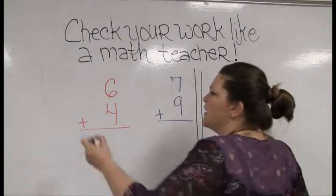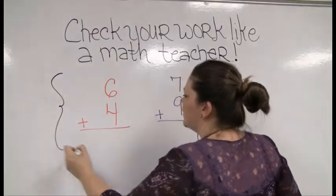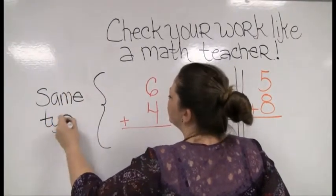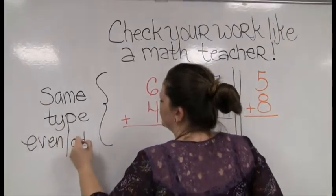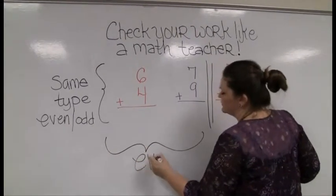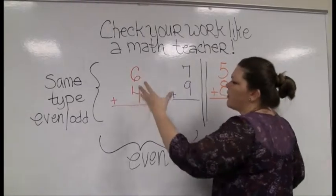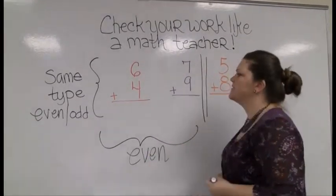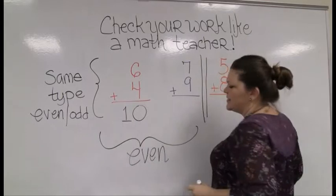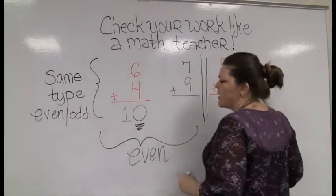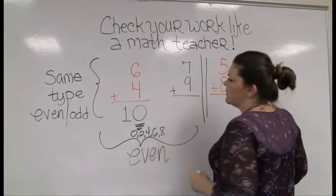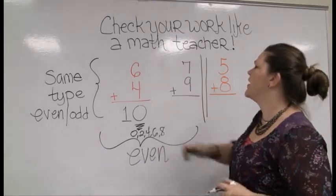What I want to point out to you is that when the two numbers we're adding are the same type of number, and what I mean when I'm talking about types here, I'm talking about even or odd. When they're the same type of number, I'm expecting to get an answer that's even. So, six and four are both even numbers. And when I add six and four, I get ten.